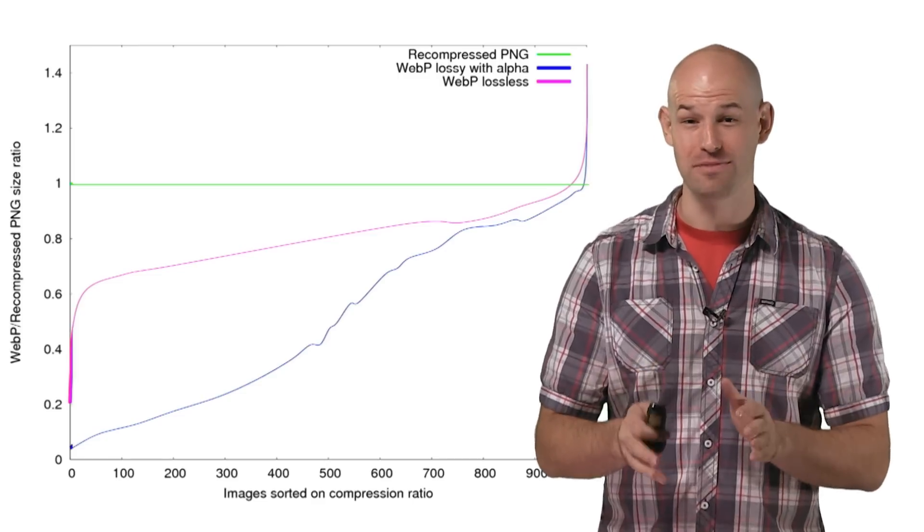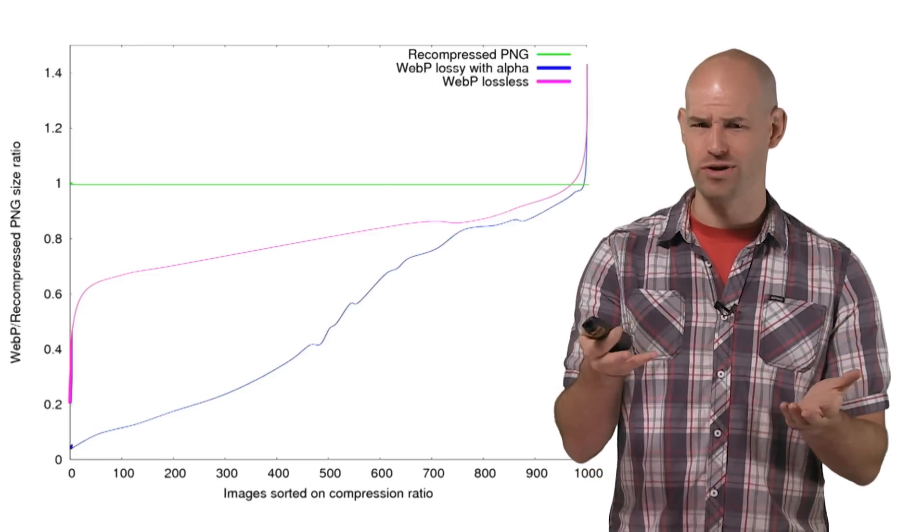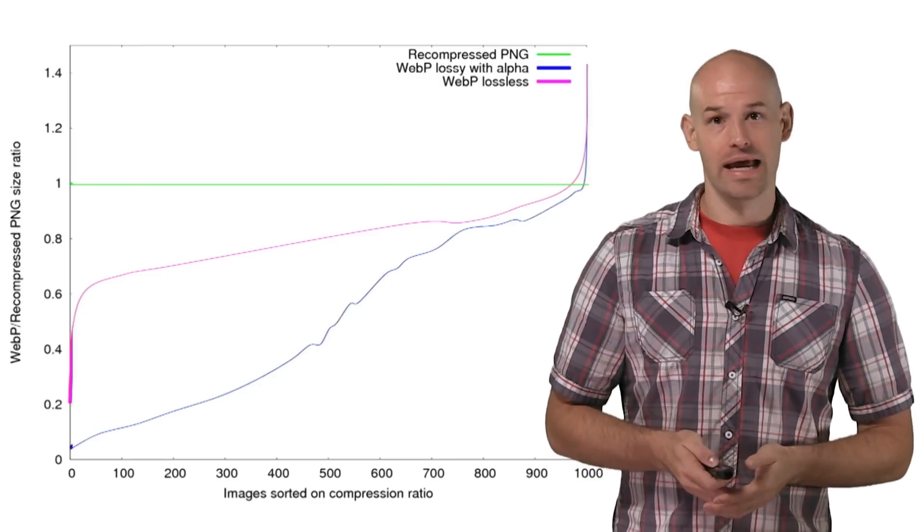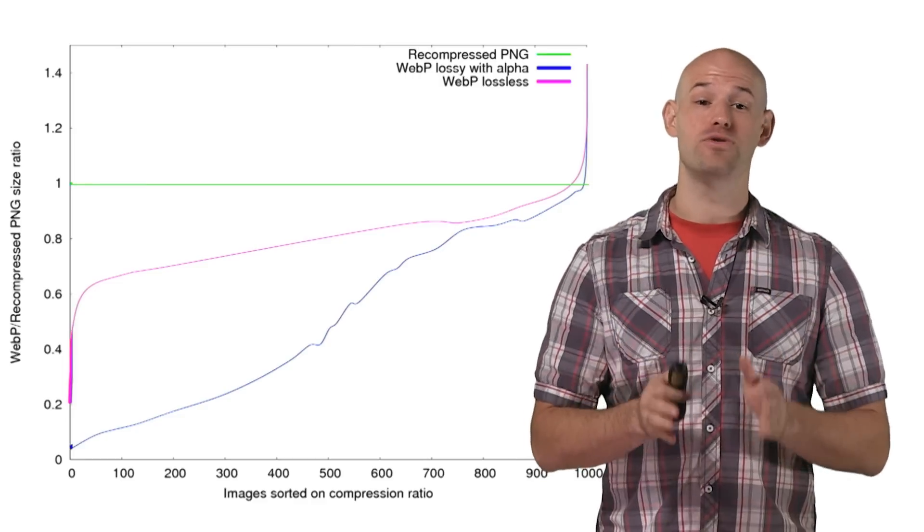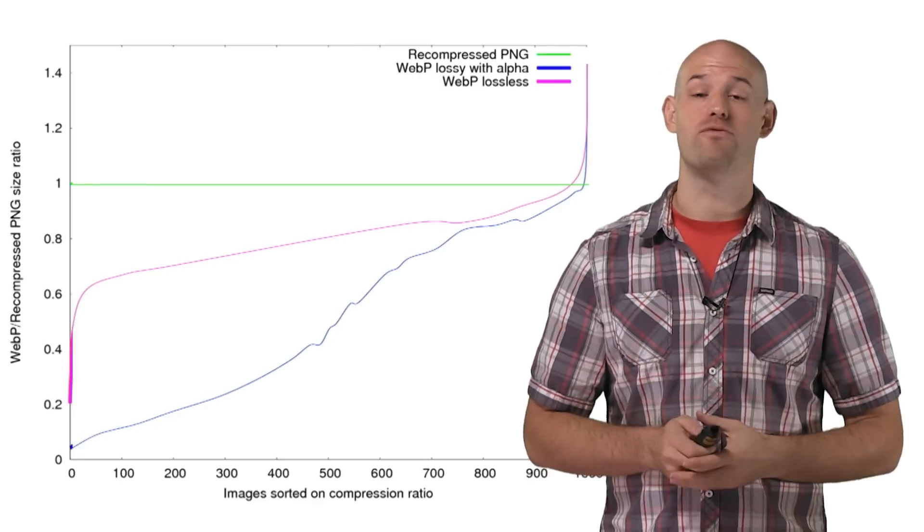That odd little spike at the end, though, is caused by 1x1 pixel images, which you'd expect some weird spikes to go on there, right? Anyhow, this is a perfect time to remind you of a couple tips of getting the most out of WebP.